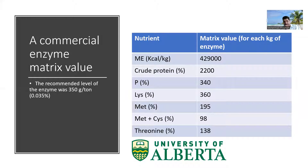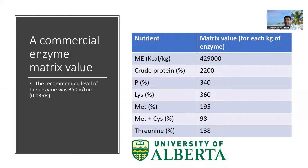Let's pay attention to matrix value. These numbers you can see here — for example, for metabolizable energy, for each kilogram of the enzyme, it provides around 429,000 kilocalories per kilogram energy. It means that if you feed one kilogram of this enzyme, it's going to liberate this amount of energy from your diet. Or for crude protein, the value is 2,200 percent, meaning one kilogram of this enzyme liberates that much crude protein from your diet.